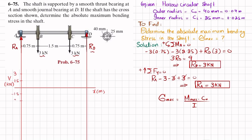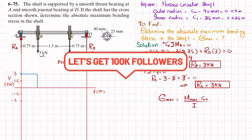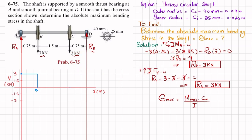At point A we have Ra equal to 3 kilonewtons, so the first point is at 3. Moving from A to B there is no other shear force, so the shear force remains horizontal. At point B we have minus 3 kilonewtons downward, so plus 3 minus 3 brings it to zero. From B to C there is no other shear force, so it remains horizontal. At point C we again have minus 3 downward, so shear force changes to minus 3.